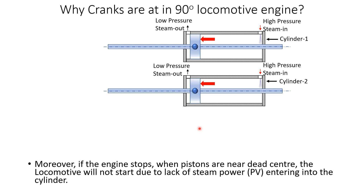Moreover, when the engine stops and the pistons are near dead center, the locomotive will not restart due to lack of steam power — that is, pressure times volume entering the cylinder. There will be very small P×V available; if steam enters from one port there will be large volume but insufficient inertia for the crank to turn, and if steam enters after top dead center the volume will be too small to push the piston and overcome the engine's inertia.